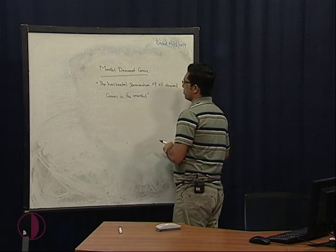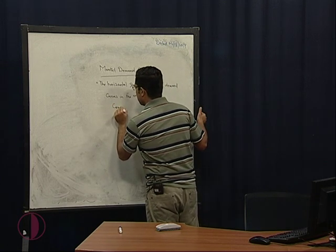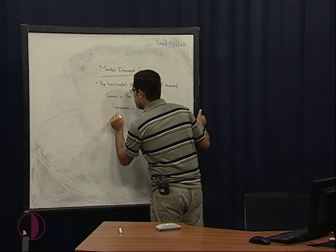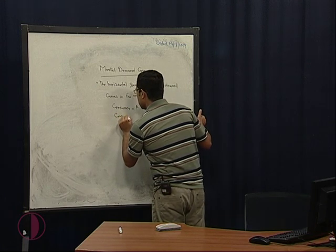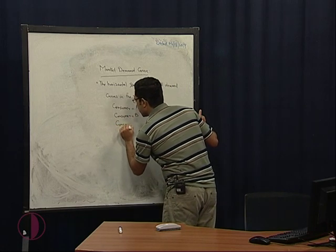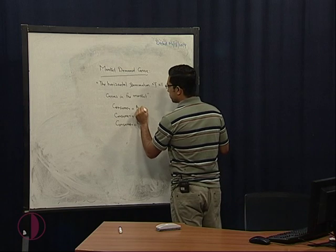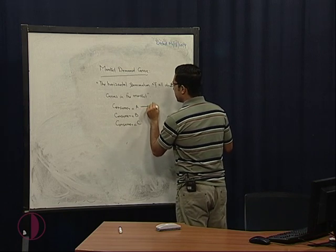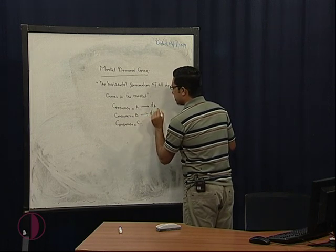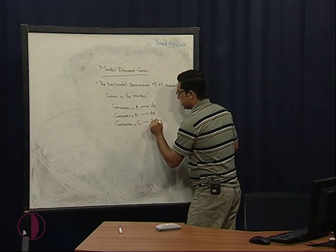For example, we have three consumers in the market: Consumer A, Consumer B, and Consumer C. Suppose the quantity demanded for Consumer A is D_A, the quantity demanded for Consumer B is D_B, and for the third consumer, which is C, the quantity demanded is D_C.